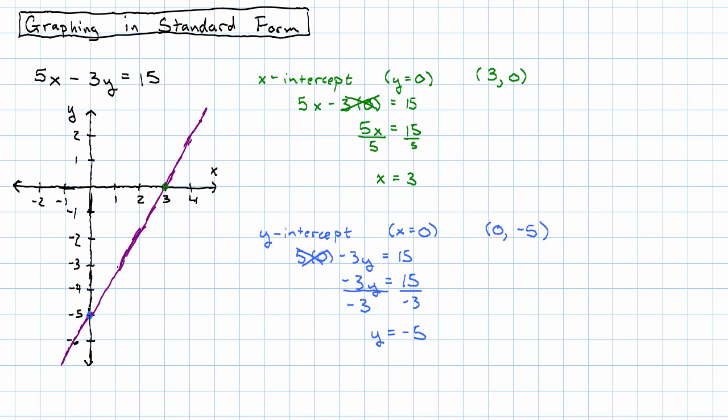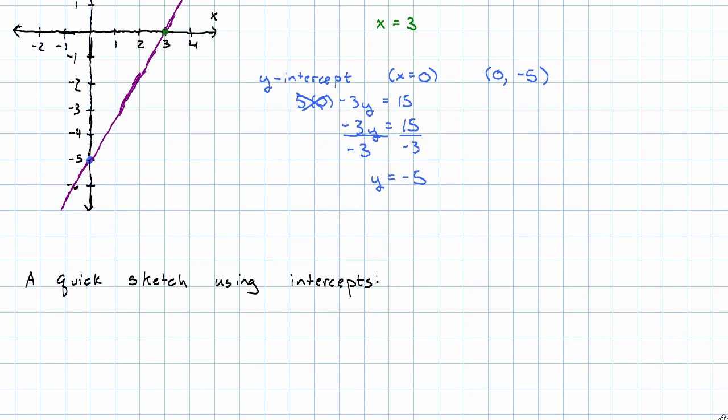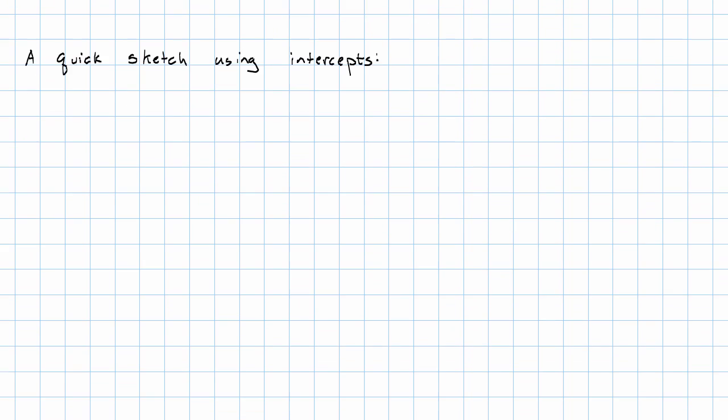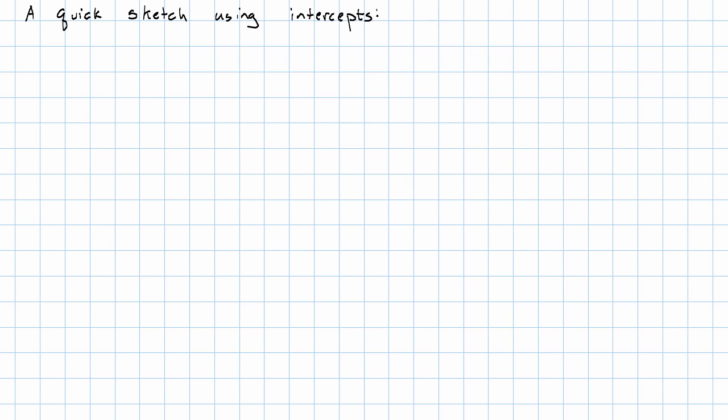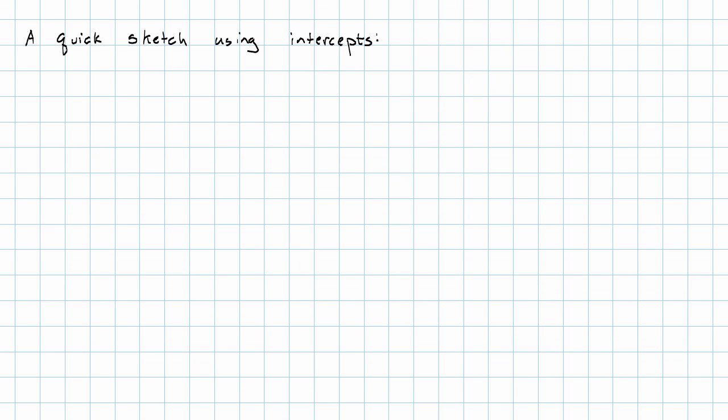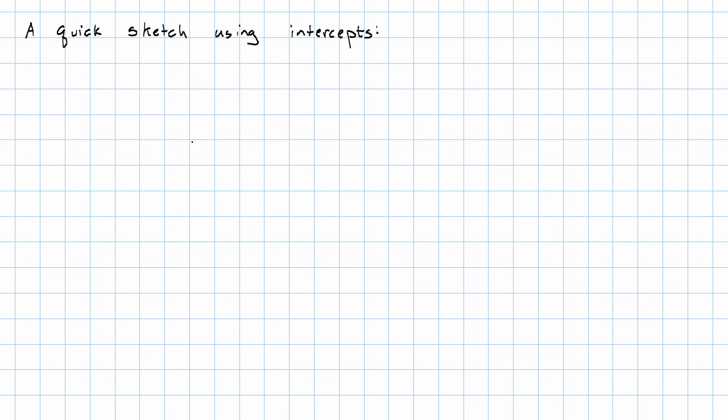Here we have nice x and y intercepts. Sometimes all we want is just a really vague idea of what our equation looks like. We can make a very quick sketch using the x and y intercepts. So suppose we have the equation 5 twelfths x plus 11 fifteenths y equals 7 sixths.